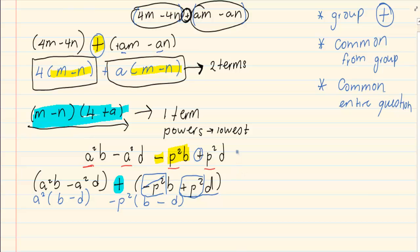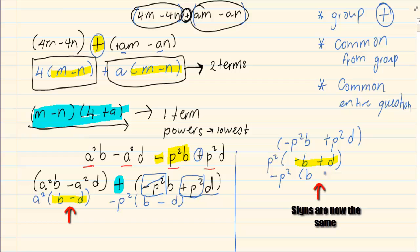Let's do it a different way, just on the side so you can understand. If I'm working with the second bracket, which is minus p squared b plus p squared d, let's say you've seen that p squared is a common. So you're left with minus b plus d. But when we have a minus b plus d, if you look at your first bracket, the signs are different. So what we're doing is we're taking out a negative as a common, like how you would take out negative 1. But as soon as I take out a negative, then this becomes b minus d.